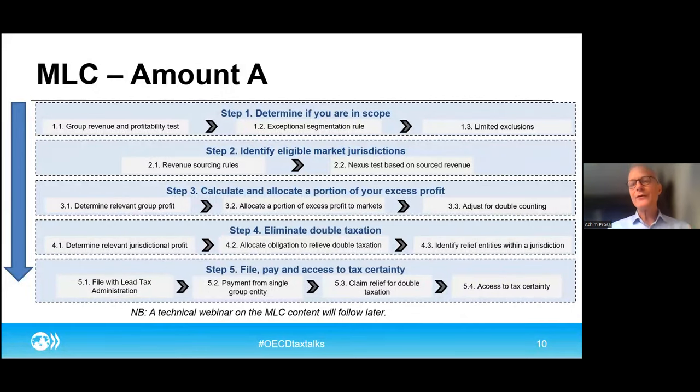It is an instrument that will change existing tax treaties to introduce the STTR. It's not a new instrument that will create new treaty relationships between countries — it's only an instrument that will introduce the STTR where relevant in existing tax treaties. It's also an instrument that could update the treaty network of countries all at once, meaning that with one signature and one ratification, a country could update all of its relevant tax treaties at once, just like the BEPS multilateral instrument. However, this new instrument is different from the BEPS MLI in various ways — for instance, unlike the BEPS MLI, it is not flexible and does not contain any reservations.